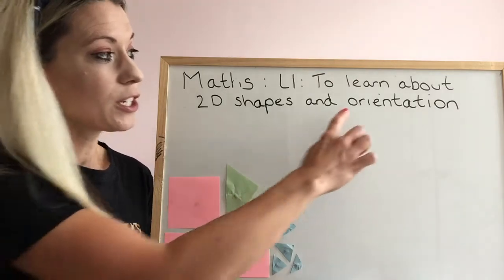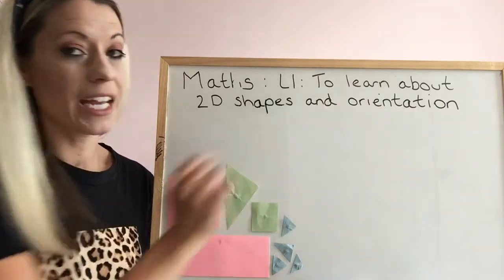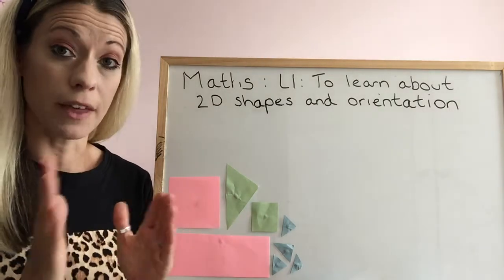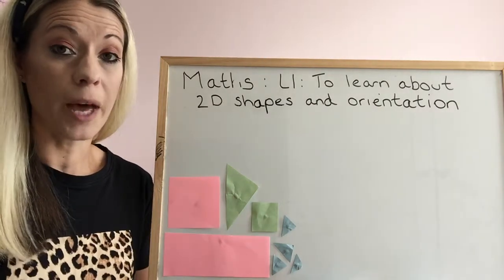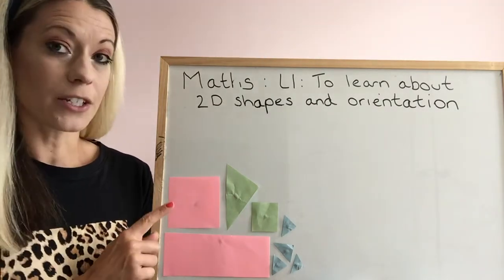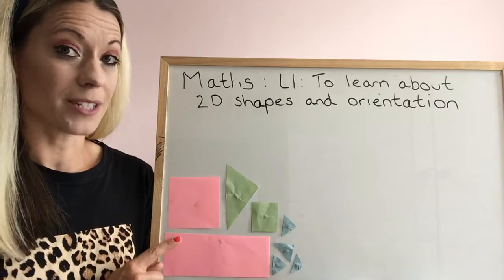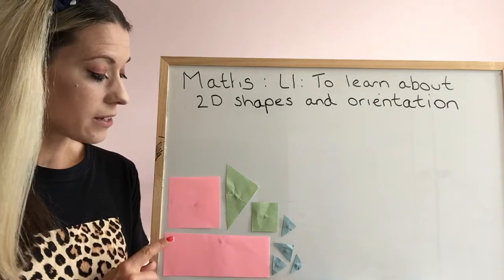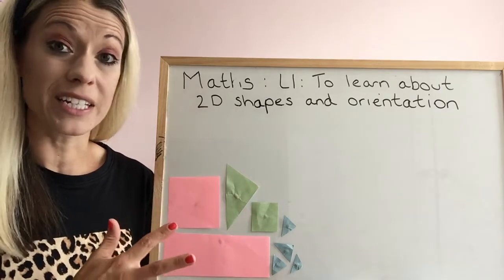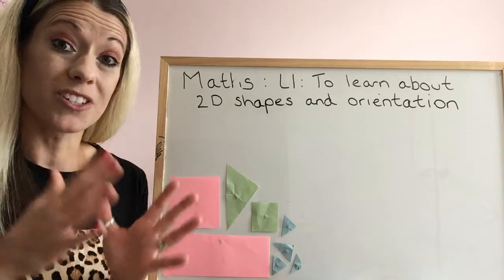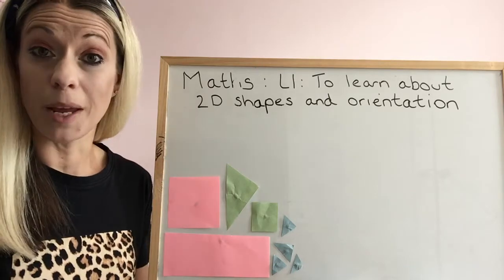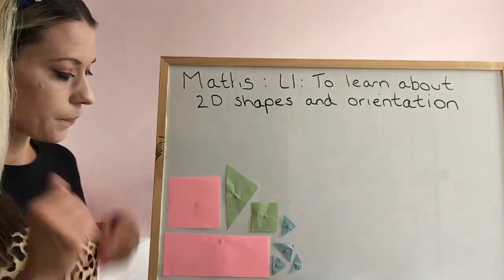So this word orientation means how we position shapes on the page. I've cut some shapes out here and I thought I could have a play around at their orientation — at positioning them to see if I can make a picture.